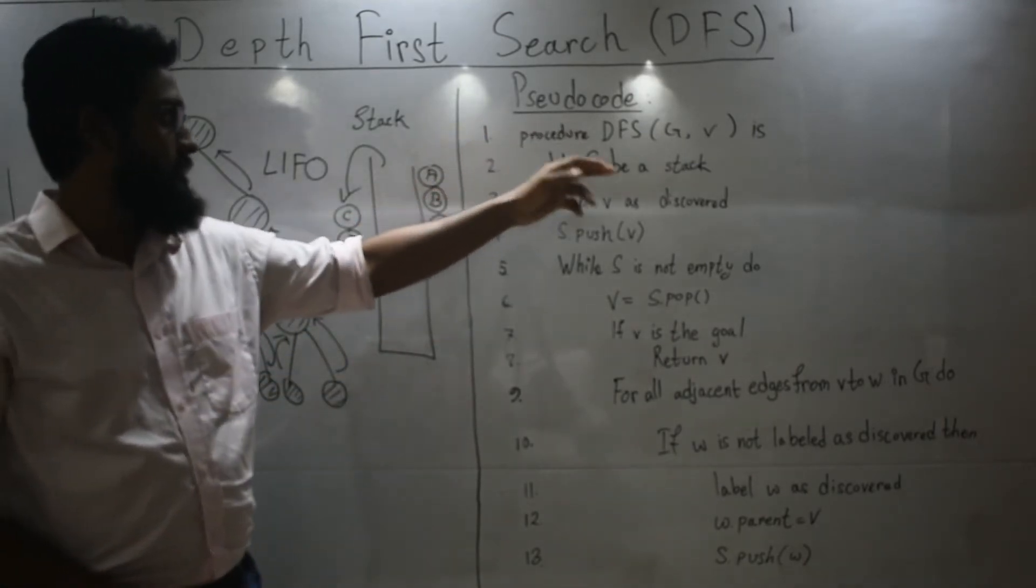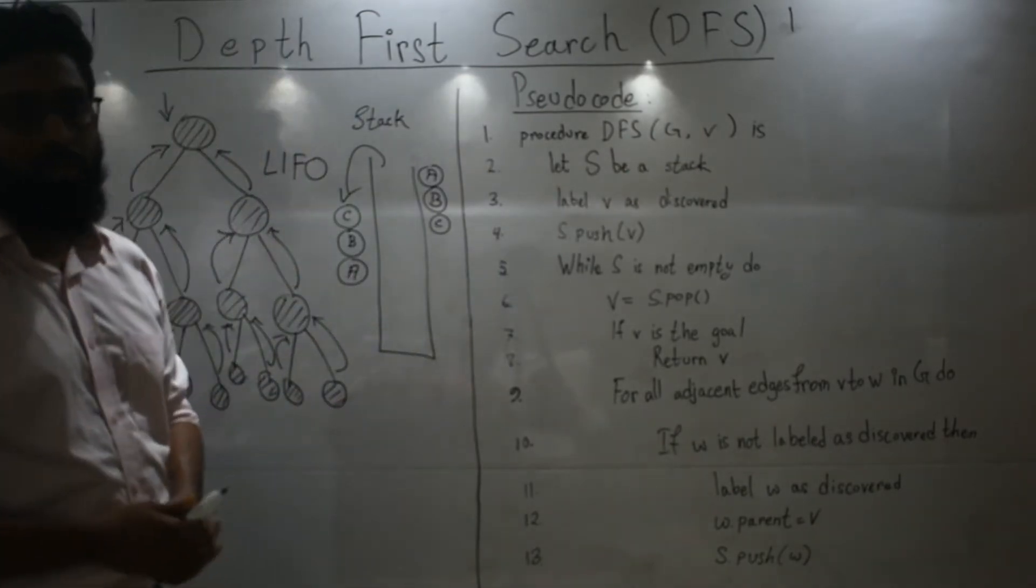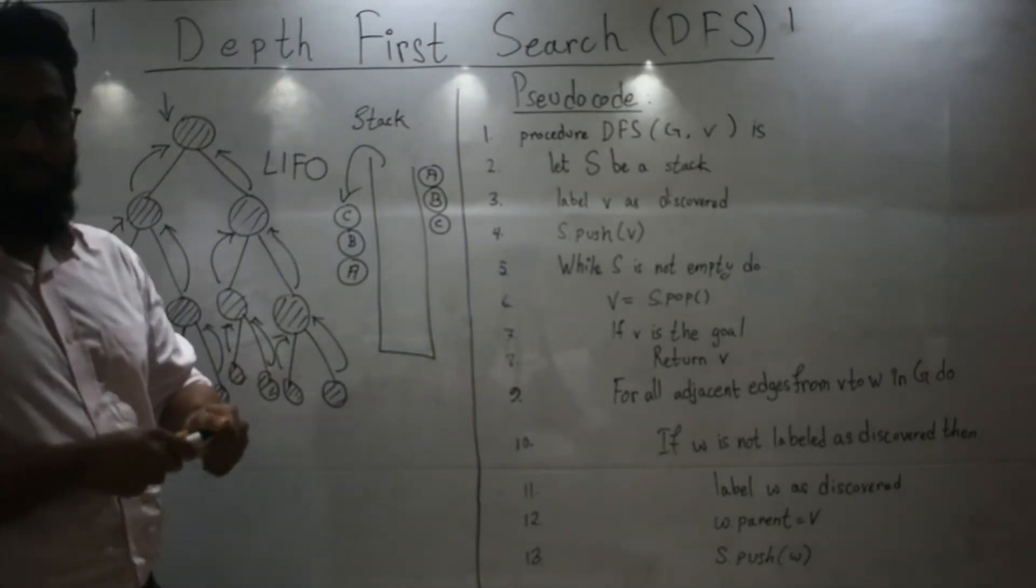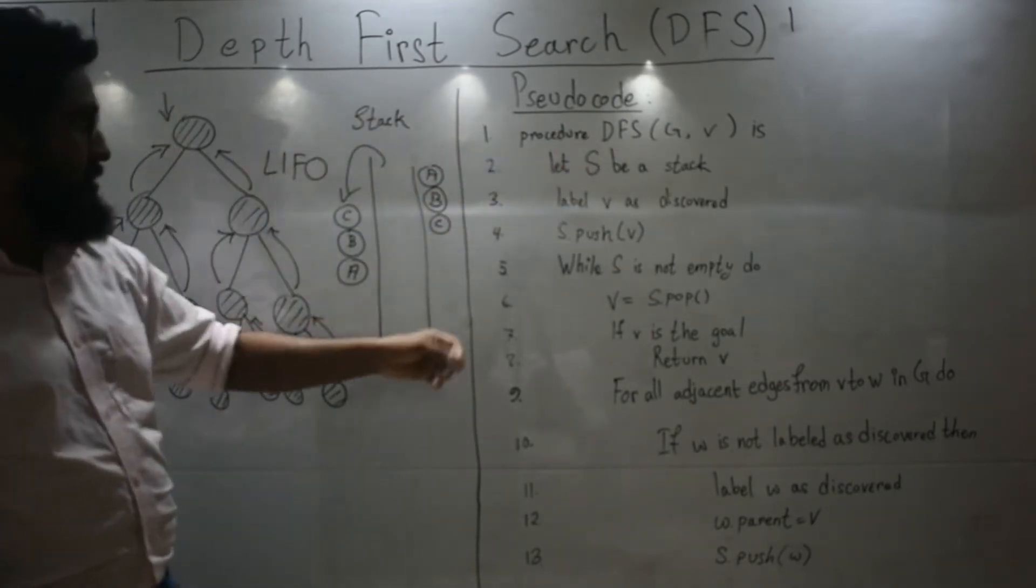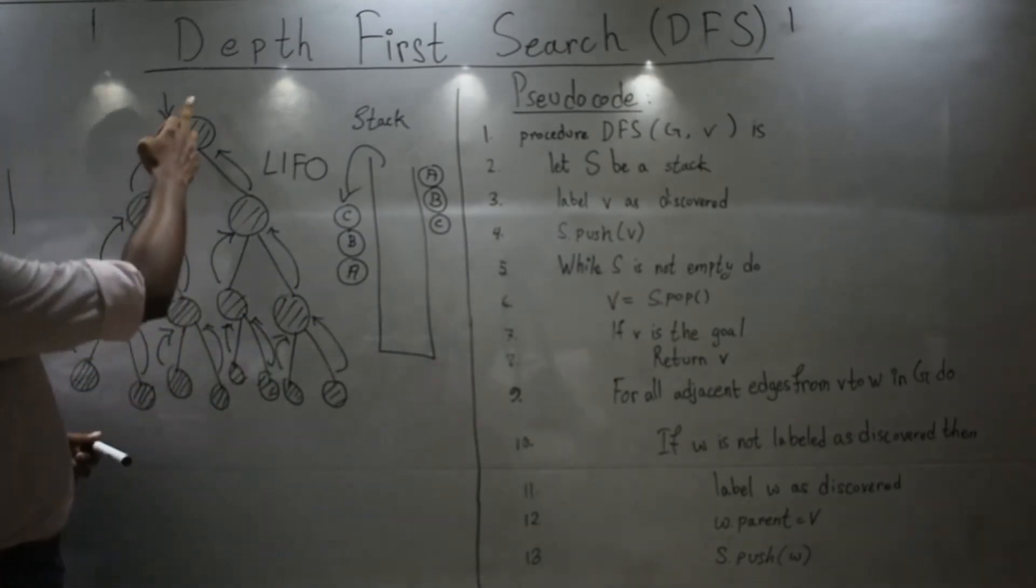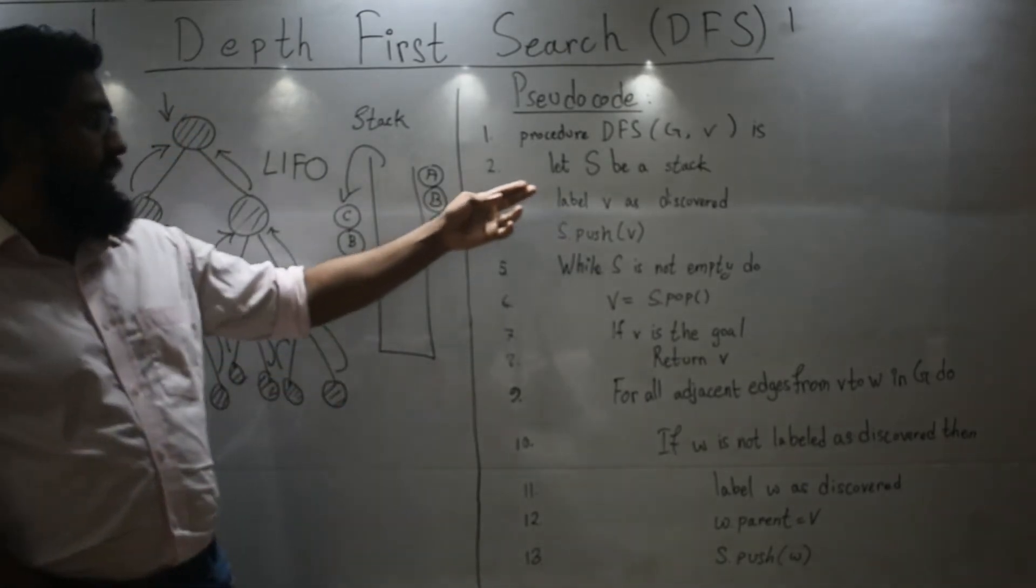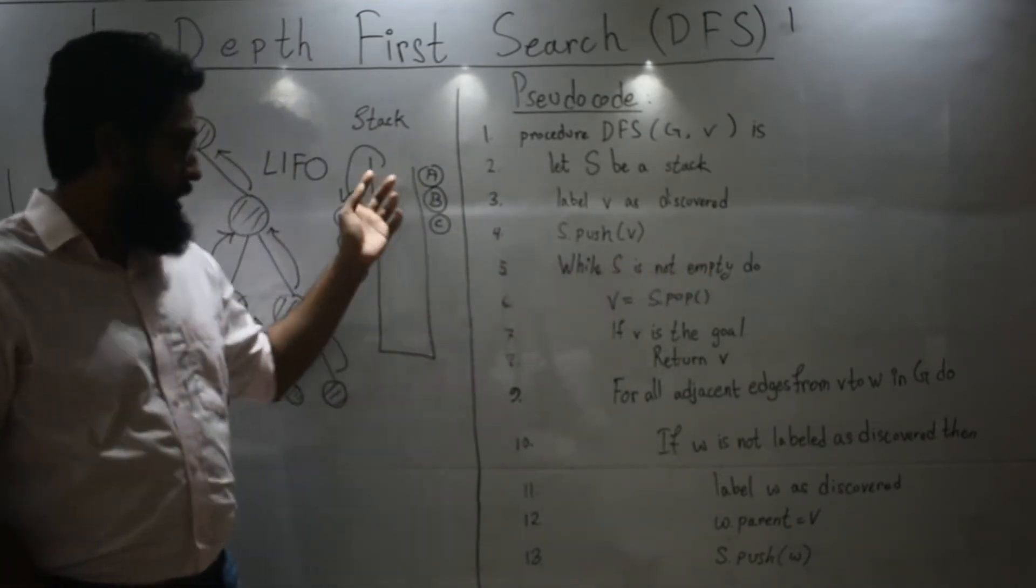So you call the procedure. G is for the graph and V denotes your root node or the node that you want your search to start from. Let S be a stack. Stack over here. Label V as discovered. See? We have discovered them. And then push.